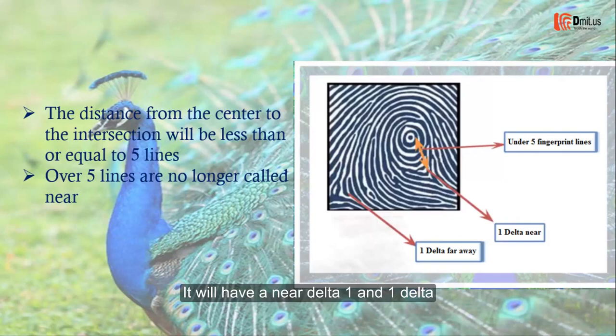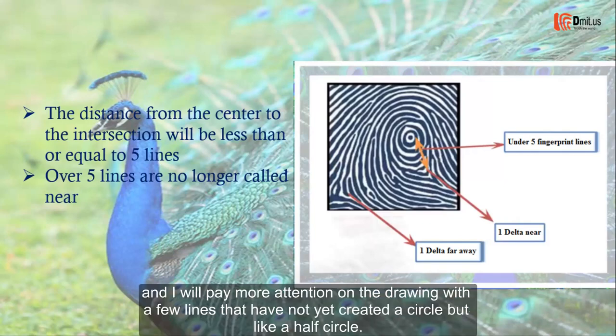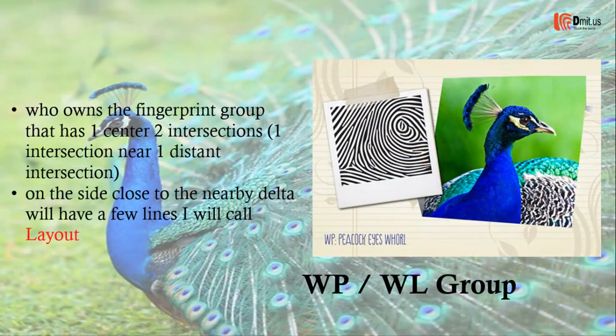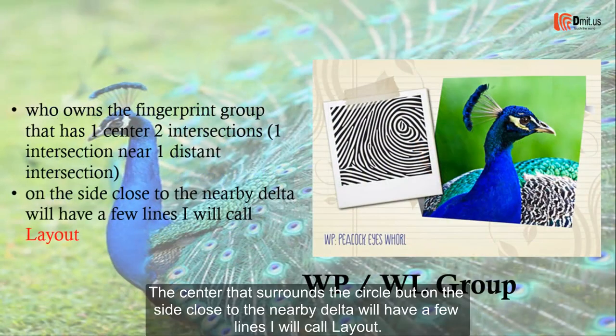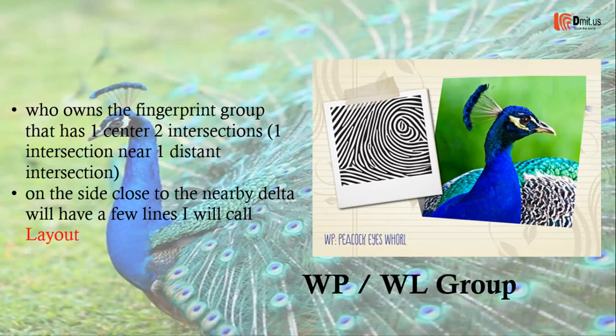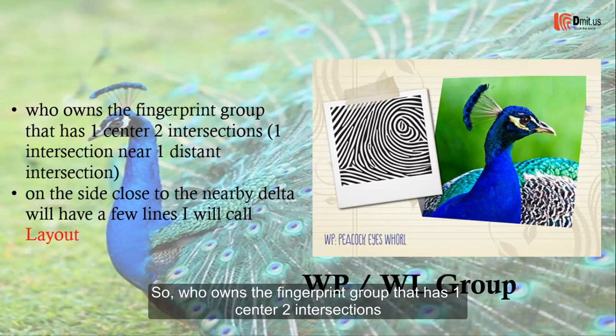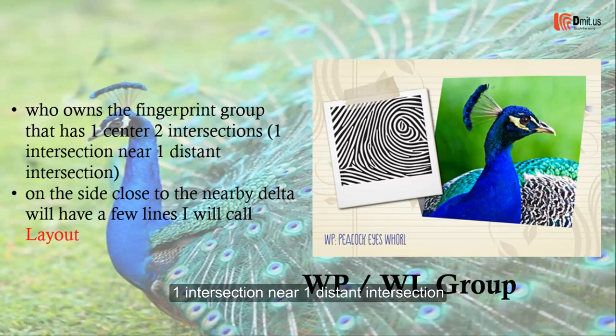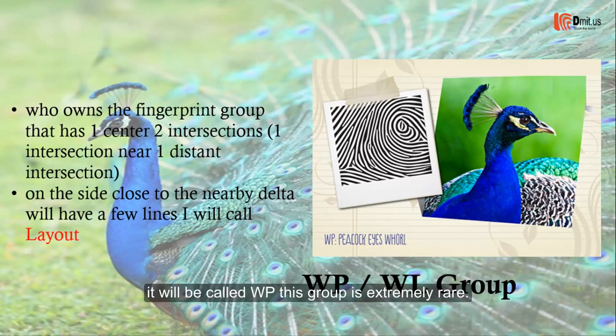It will have one near delta and one far delta. Pay more attention to the drawing: there are a few lines that have not yet created a full circle but like a half circle surrounding the center. On the side close to the nearby delta, there will be a few lines — I will call this the layout. The fingerprint group that has one center, two intersections, one near and one distant intersection, and has this layout, will be called WP.